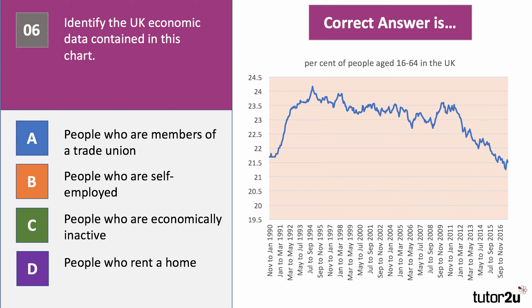The answer to chart six is the economically inactive population — the percentage of people of working age who are not either in work or actively searching for work. That figure has come down but is still over 20%. Reasons include chronic illness, caring for elderly relatives, full-time education, early retirement, or long-term unemployment leading people to give up the search for work. The economically inactive population is a significant supply-side indicator in the labour market.